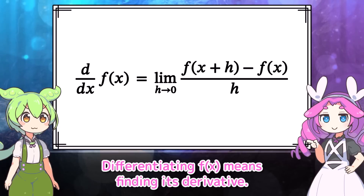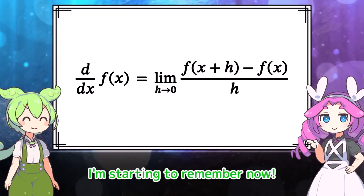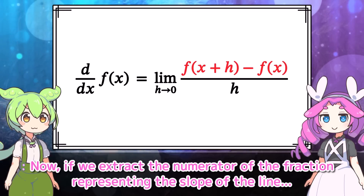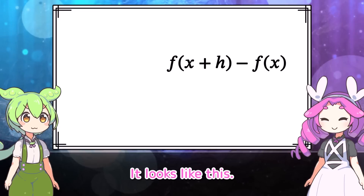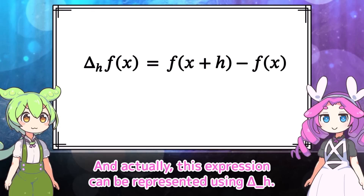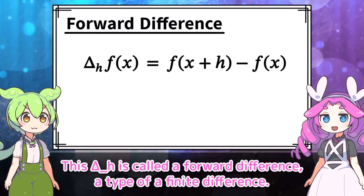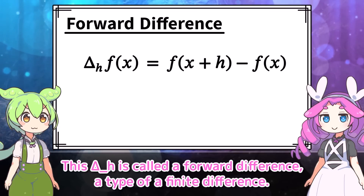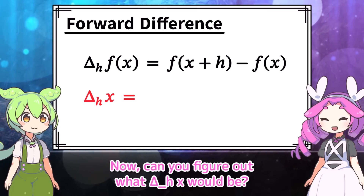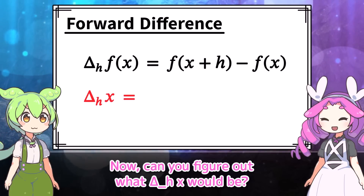Differentiating f of x means finding its derivative. Now if we extract the numerator of the fraction representing the slope of the line, it looks like this. And actually this expression can be represented using delta h. This delta h is called a forward difference — a type of finite difference. It represents the change in f corresponding to the change in x by h. Now, can you figure out what delta h of x would be?